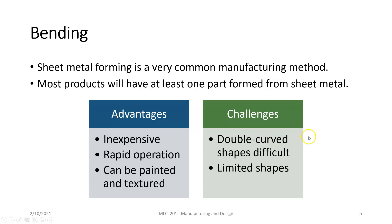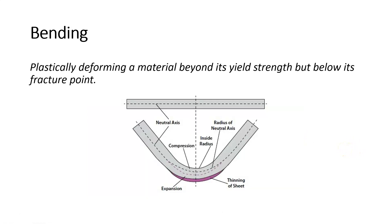Looking more specifically at what's going on with a bending operation: we're plastically deforming the material beyond its yield strength. The yield strength is that little peak in the stress-strain curve that separates the elastic region from the plastic region. We have to go beyond the yield strength into the plastic region so that the object, when we bend it, stays bent. Now, there is what's called a spring back, where when we bend a piece of sheet metal, it comes back a little bit from the original bent shape.